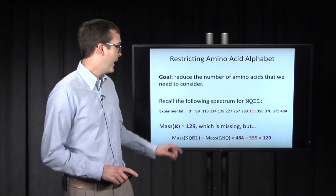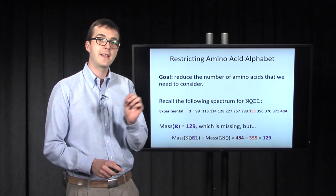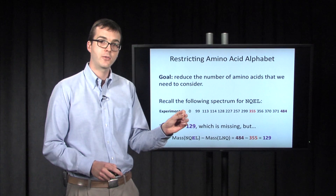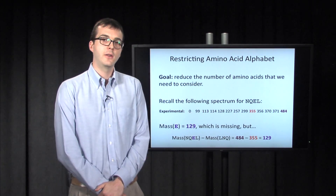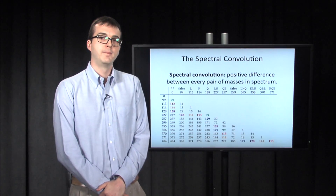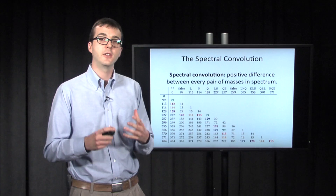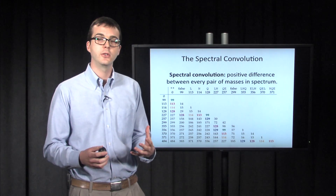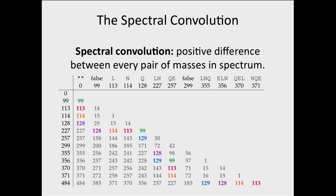It may not be in the spectrum directly, but if we start subtracting masses that are in the spectrum, we're going to get three occurrences of 129. This is going to motivate our definition of what's called a spectral convolution — the convolution of a spectrum — and it's the positive difference between every pair of masses in the spectrum.